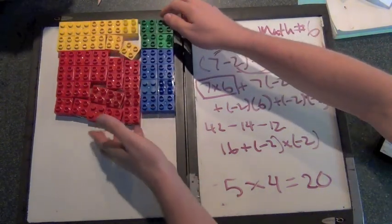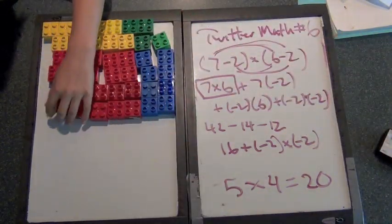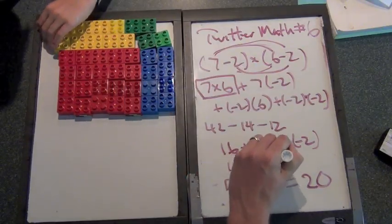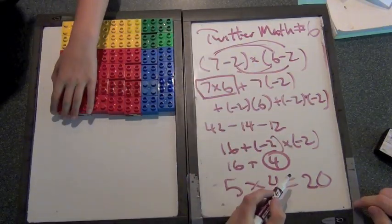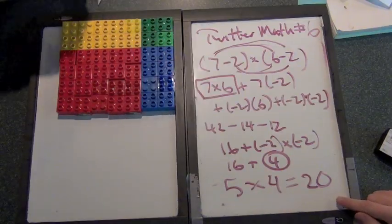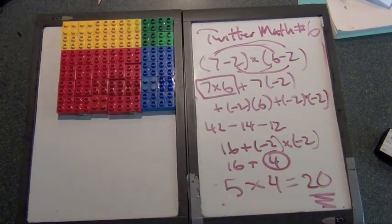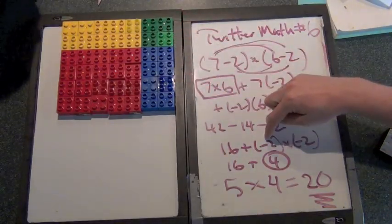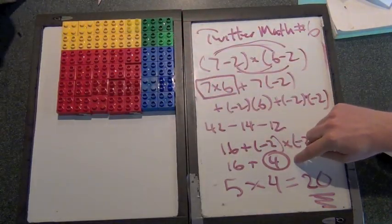So we've taken it away once, taken it away twice. So this minus two times minus two becomes sixteen plus four. And sixteen plus four is? It's twenty. It gets us exactly to where we thought.